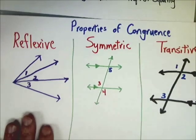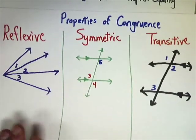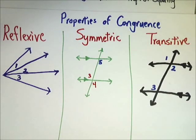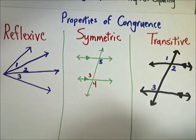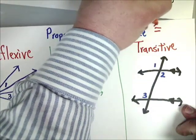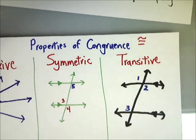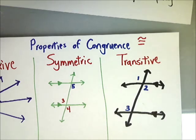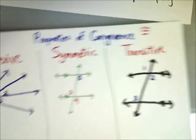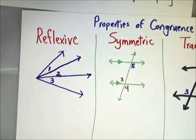Now let's talk about properties of congruence. A couple of properties can be about equality and also about congruence. The congruence symbol is an equal sign with a little tilde over the top - it's a generic term for equal. Segments are congruent because they measure the same length; angles are congruent because their angle measurements are the same.